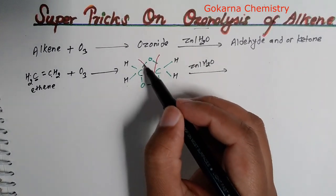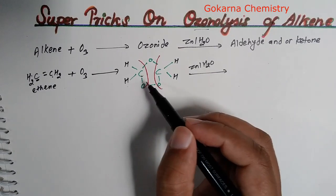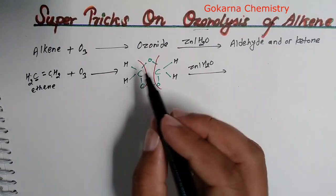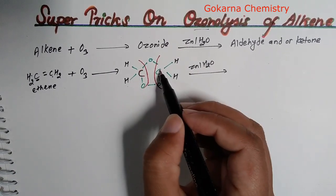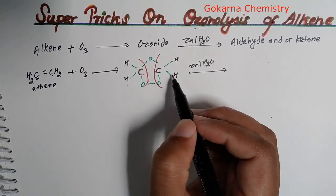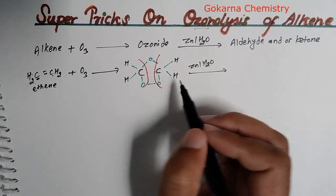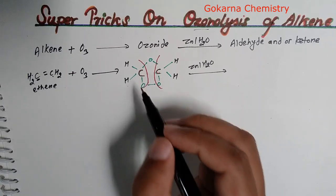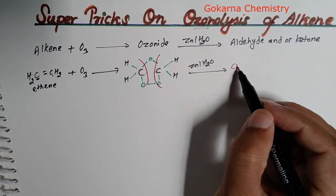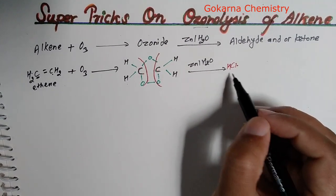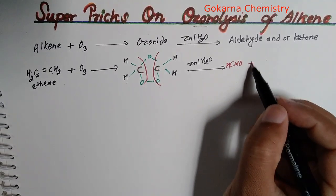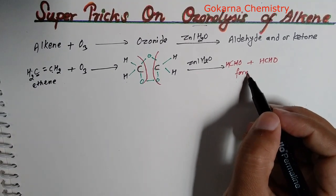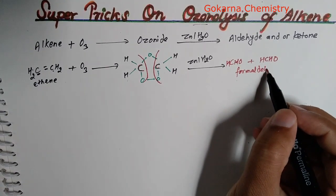This carbon has hydrogen. This carbon is called aldehyde. So it's HCHO plus HCHO, which is formaldehyde. We will do ozonolysis.